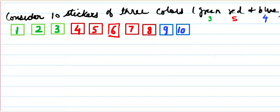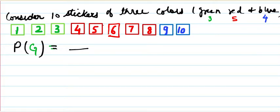Before discussing conditional probability, let's start with the usual way of finding probability. If I want to find the probability of getting a green sticker out of these 10, the total number of stickers is 10 and there are 3 green ones, so it is 3/10, which is 0.3 or 30%.